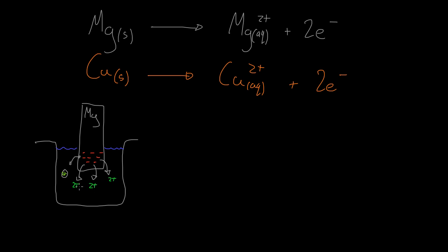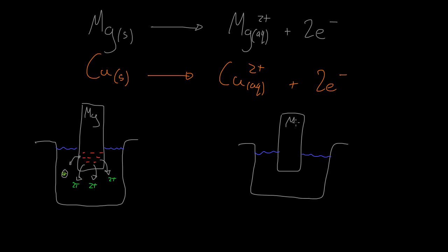But when this has happened, some of the ions are going to want to go back. So some of these 2+ ions are going to go back onto the magnesium strip, taking up two electrons and essentially doing the reverse of this reaction. That's going to continue until we get to a point where the reaction going forward and backwards has reached a dynamic equilibrium — we'll still see ions coming off and going back on, but the overall amount of ions in solution will remain pretty much constant.